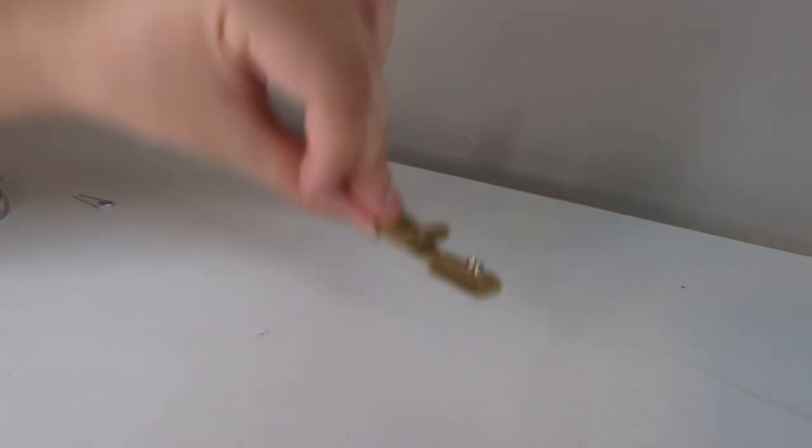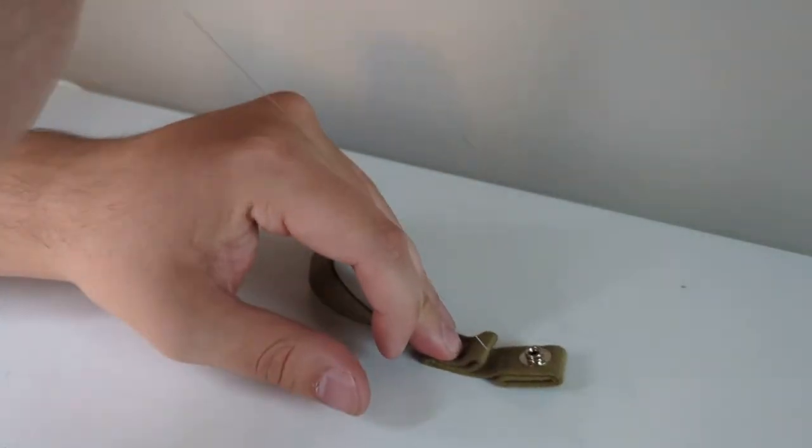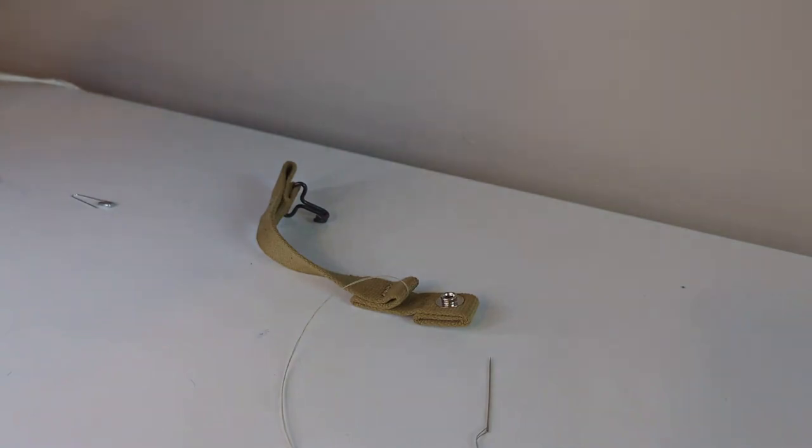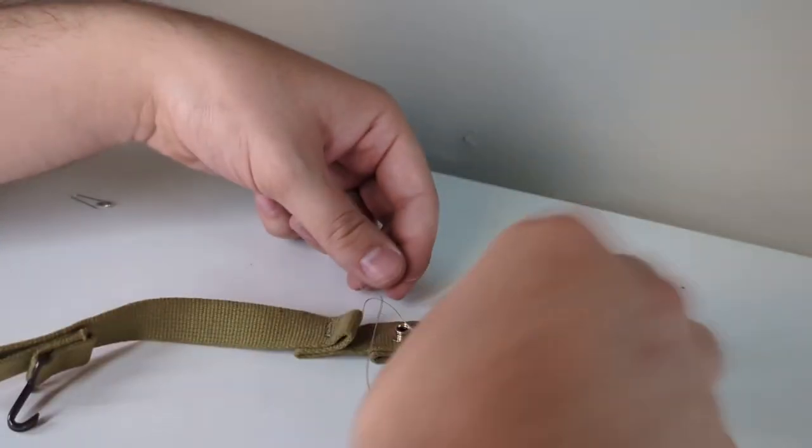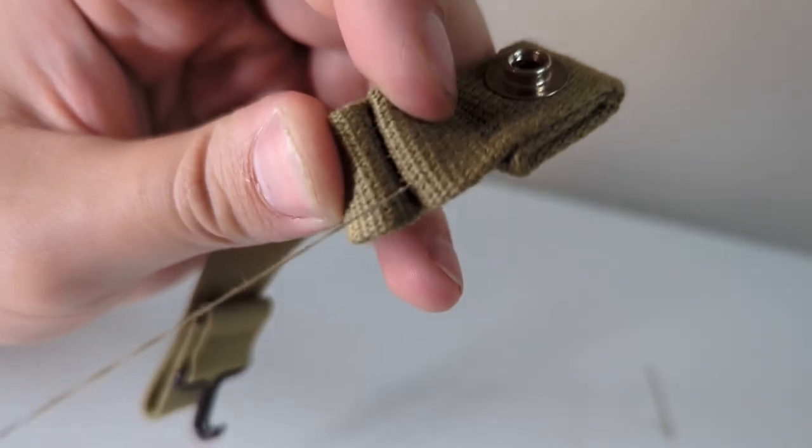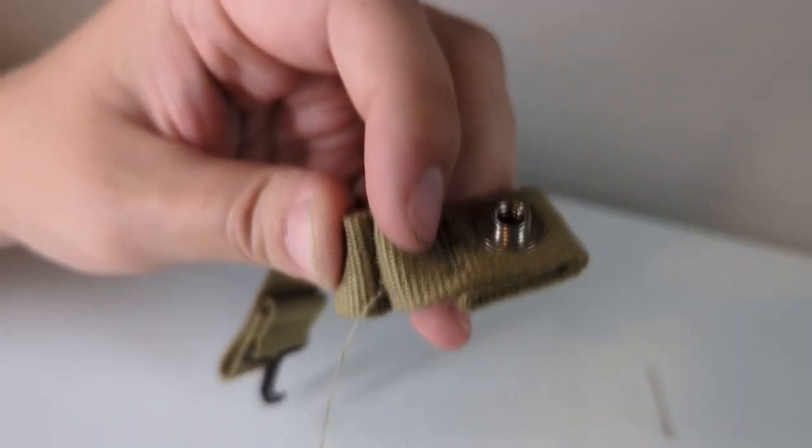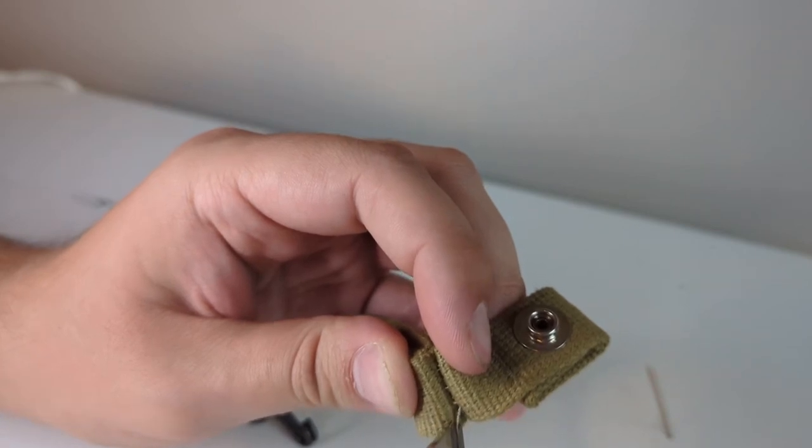Now you're going to poke it through just that first layer there. Pull it tight and that should be the last of the sewing you're going to have to do. You're just going to tie it off just like you would when you're sewing a patch on or making a repair. Pull it tight and then just trim the excess. And that's a finished chin strap right there.